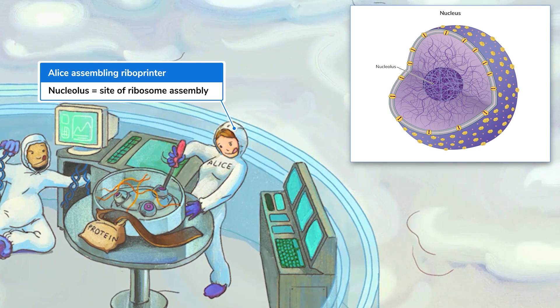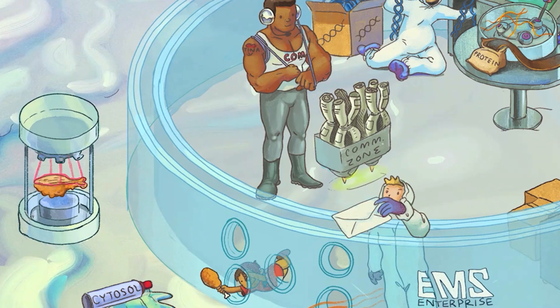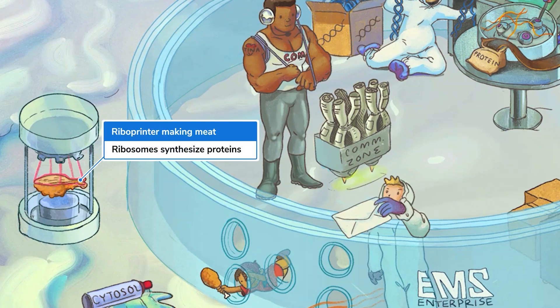Next, we're going to take a peek at the nucleolus, where ribosomal RNA — rRNA — is synthesized. Alice here, Nuclealus, is assembling a riboprinter inside the command center to remind you that ribosomes are assembled in the nucleolus, which is a structure within the nucleus. Ribosomal RNA is combined with proteins to build ribosomes. These tiny non-membrane-bound organelles join amino acids together to form polypeptide chains — in short, they serve as the site of protein synthesis. This riboprinter is creating space meat, representing the protein products that ribosomes synthesize.